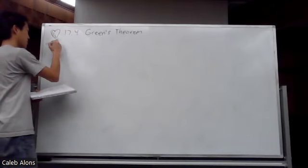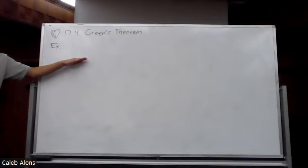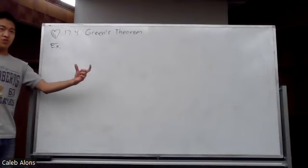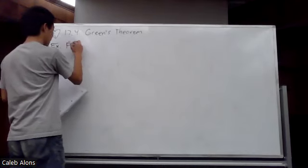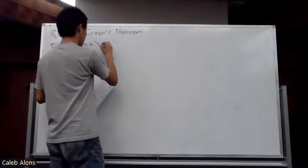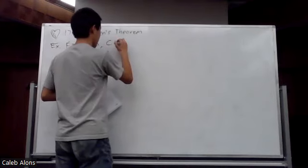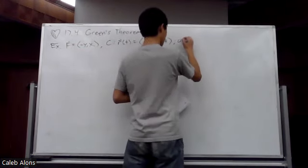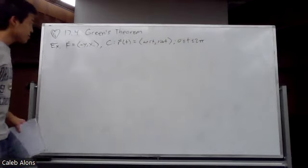Here's my favorite example because it illuminates the relationship between computations in Green's Theorem versus understanding what Green's Theorem is describing. Let's use a rotational field F = (−y, x). For the curve C, let r(t) = (cos t, sin t) starting at t = 0 and ending at t = 2π.